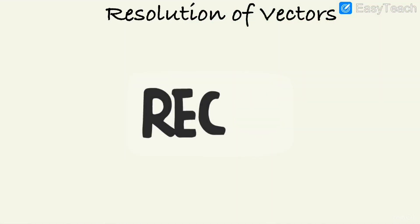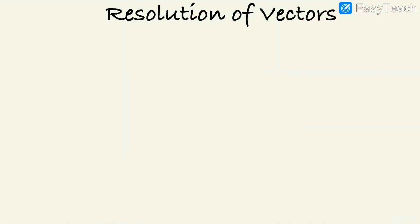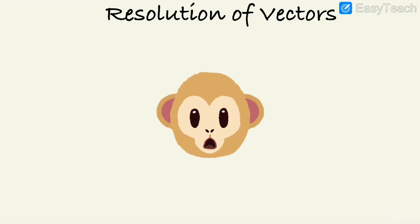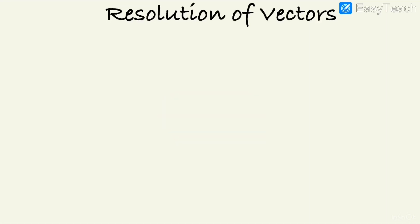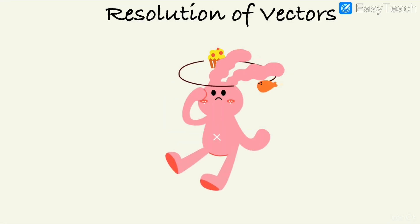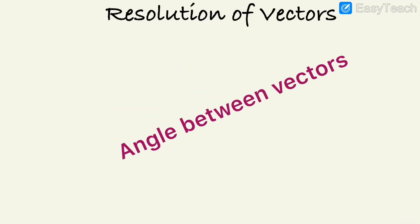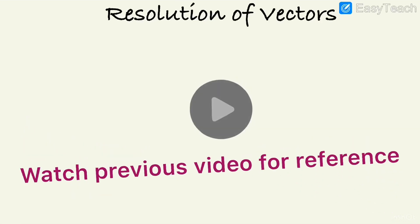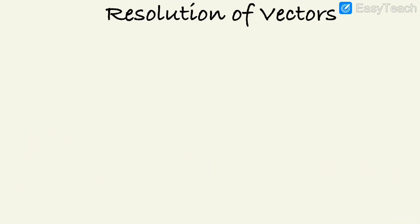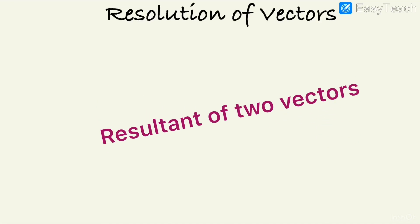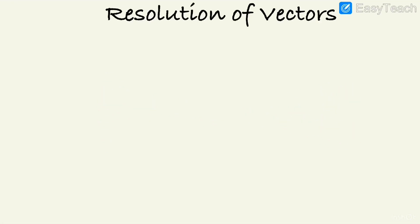Welcome to another session of this physics series where we were discussing vectors. Last class we already learned how to find the angle between two vectors using the dot product, and we learned the resultant of two, three, or any number of vectors. Now, what we have learned — suppose I take two vectors A and B.